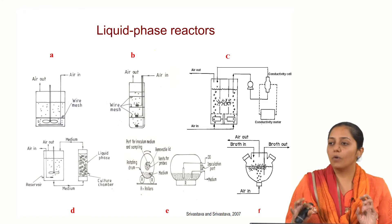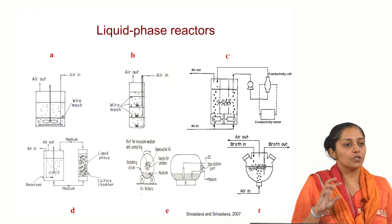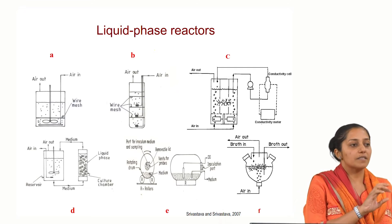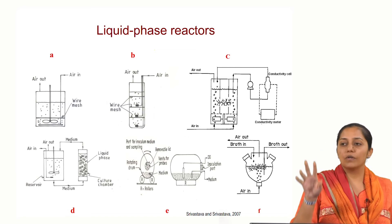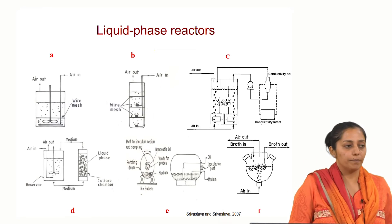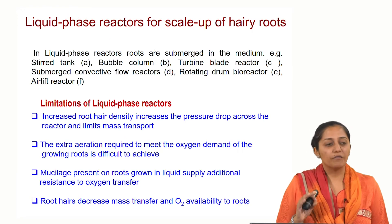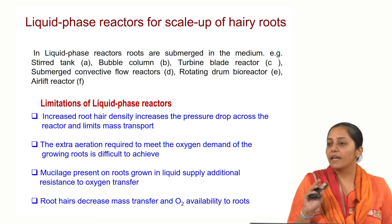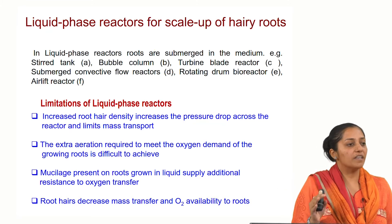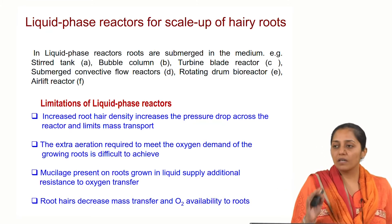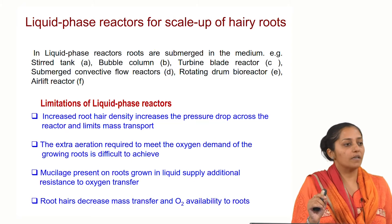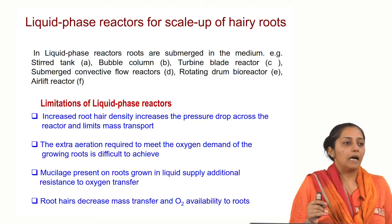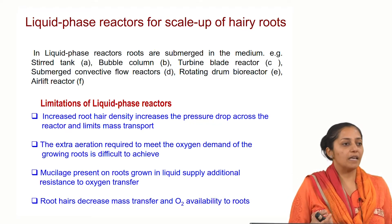If you want to avoid shear forces on the biomass, then the reservoir is aerated and mixed separately and then circulated through the culture chamber, as you can see in picture D. The configuration remains the same as bubble column or air lift reactors, but the geometry is modified to work around the mass transfer limitations for nutrients and oxygen, and because support is needed as roots are self-immobilizing.